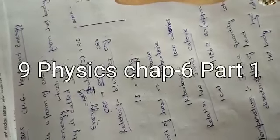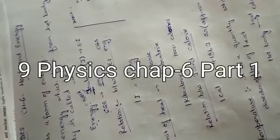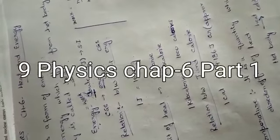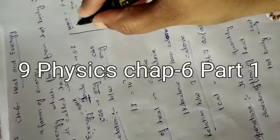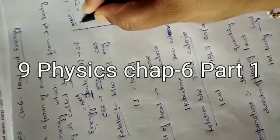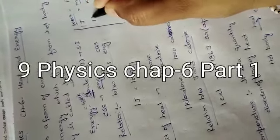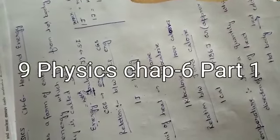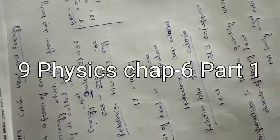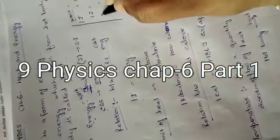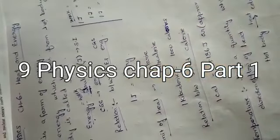So, mass is kg. Acceleration is meter per second square. And distance is again meter. So, the unit of work, that is, 1 Joule is equals to 1 kg, 1 meter square per second square. So, this is the value of 1 Joule.